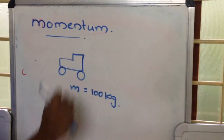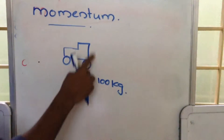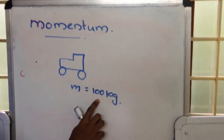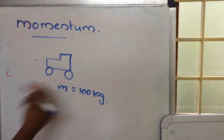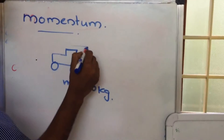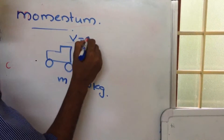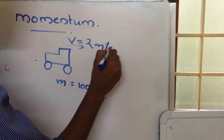I am going to study about momentum. Consider a vehicle of mass 100 kg moving with a velocity v equal to 2 m per second.